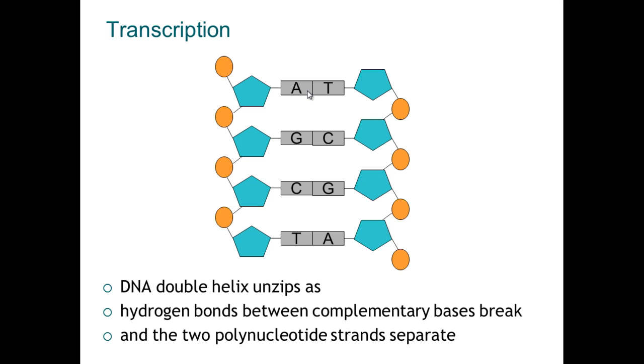The C base which is called cysteine always binds to guanine and that always happens all the way down. So whenever you get an A base, that binds with a T. Whenever you get a C, that binds with a G and you only have those four bases.